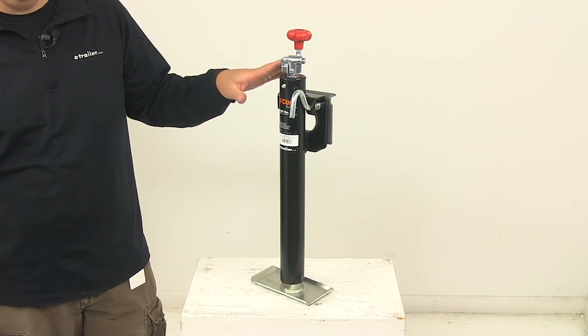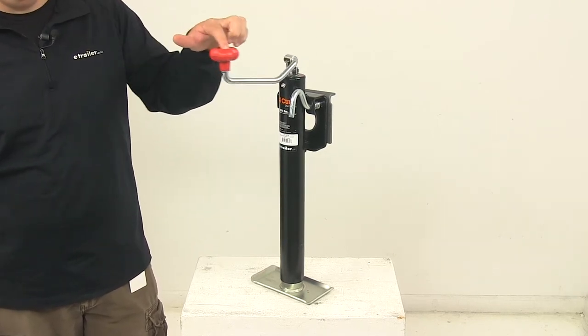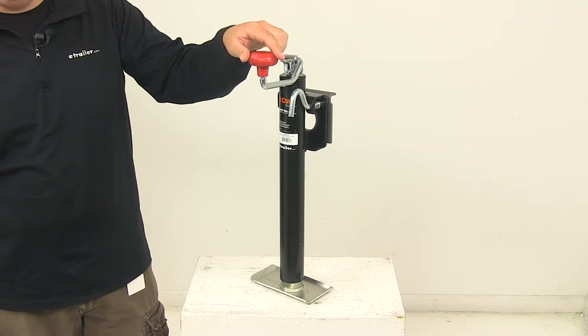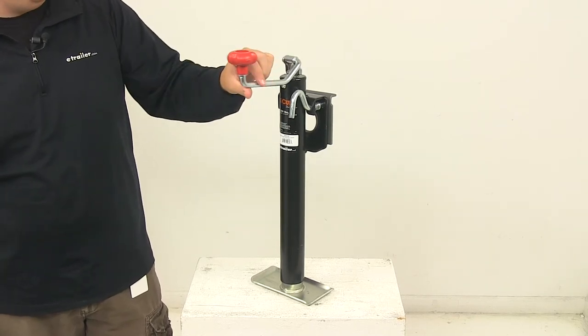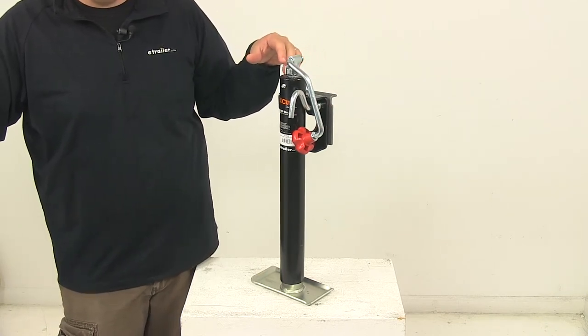It has a top wind handle that allows for easy raising and lowering of your trailer jack. That has a claw handle design that provides a comfortable, easy grip. This handle is able to rotate over to a stowed position so that it's out of the way when not in use.